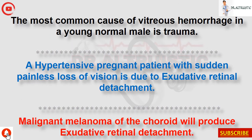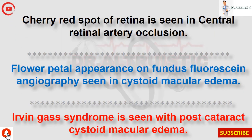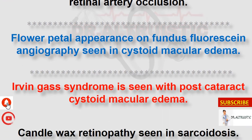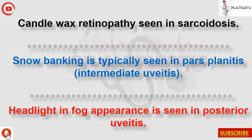Most common cause of vitreous hemorrhage in a young normal male is trauma. A hypertensive pregnant patient with sudden painless loss of vision has exudative retinal detachment. Malignant melanoma of the choroid will produce exudative retinal detachment. Cherry red spot of the retina is seen in central retinal artery occlusion. Flower petal appearance on fundus fluorescein angiography is seen in cystoid macular edema. Irvine-Gass syndrome is seen with post-cataract cystoid macular edema. Candle wax retinopathy is seen in sarcoidosis.